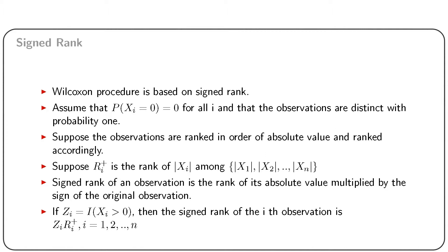We further assume that probability(xi = 0) = 0 for all i, and that the observations are distinct with probability 1. Suppose the observations are arranged in order of absolute value and ranked accordingly. Let r_i+ be the rank of |xi| among |x1|, |x2|, ..., |xn|. The signed rank of an observation is the rank of its absolute value multiplied by the sign of the original observation. If zi denotes the indicator of xi > 0, then the signed rank of the ith observation is zi multiplied by r_i+, for i from 1 to n.